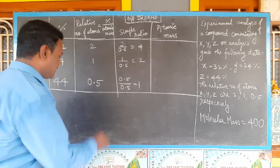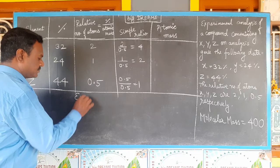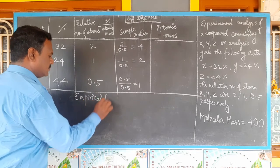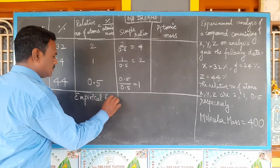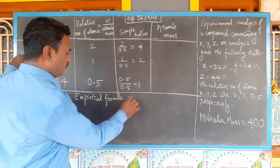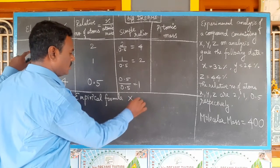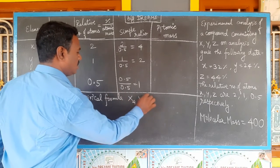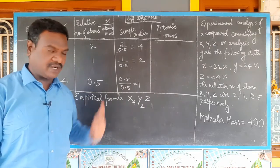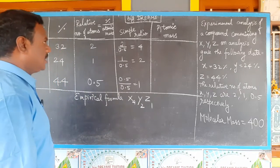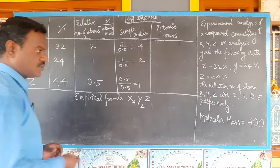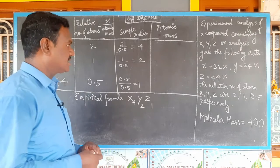So what is the empirical formula? The empirical formula is X₄Y₂Z₁. Atomic masses for X, Y, and Z are given.